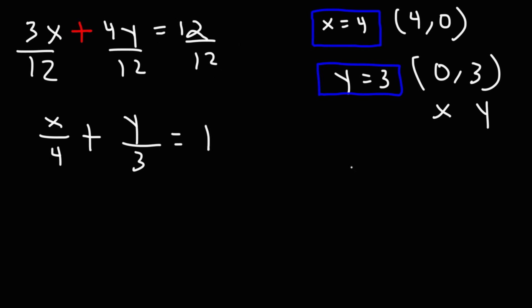So this is the intercept form. It's x over a plus y over b is equal to 1. Now, what you need to know is that a, the number under x when this is 1, a is going to be the x-intercept. b, the number under y, is going to be the y-intercept if, this is a big if, if this is 1. And we can see that here. The x-intercept is 4. And the y-intercept is 3.